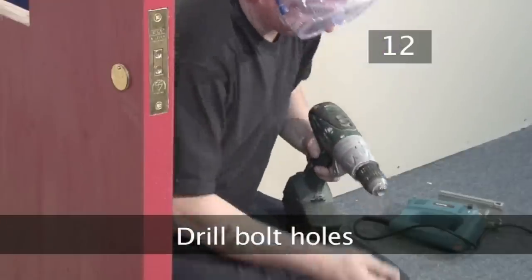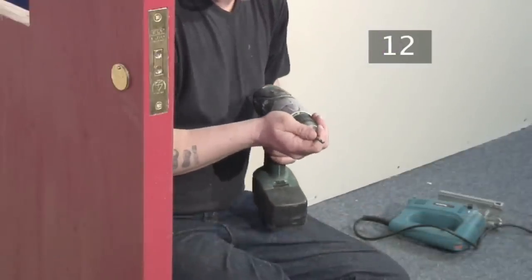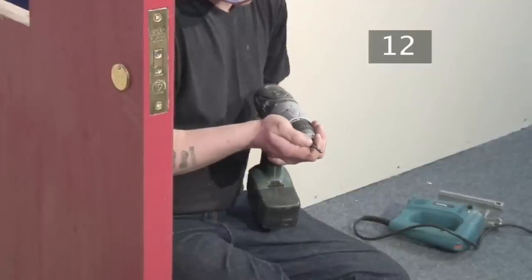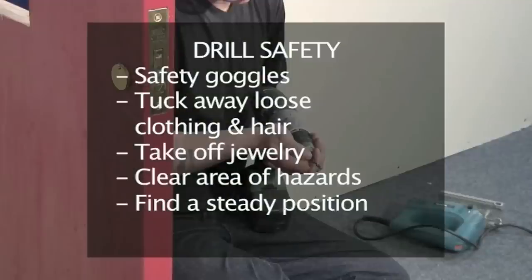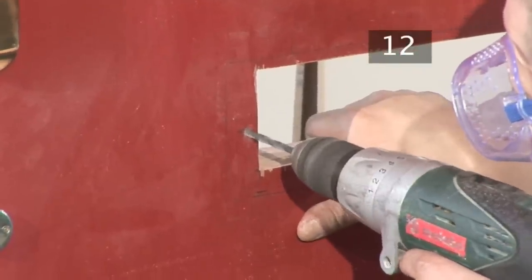Step 12. Drill bolt holes. Select a drill bit that is the same size as the fixing bolts which screw into the lug holes. Attach it to the drill. Remember your drill safety. And drill on your pencil marks right through the door.